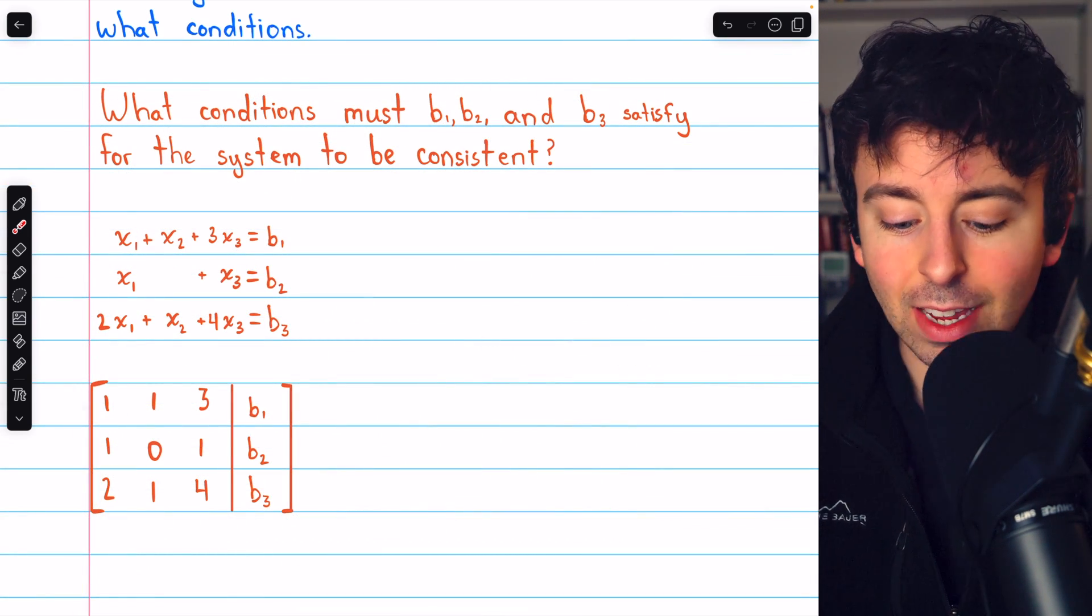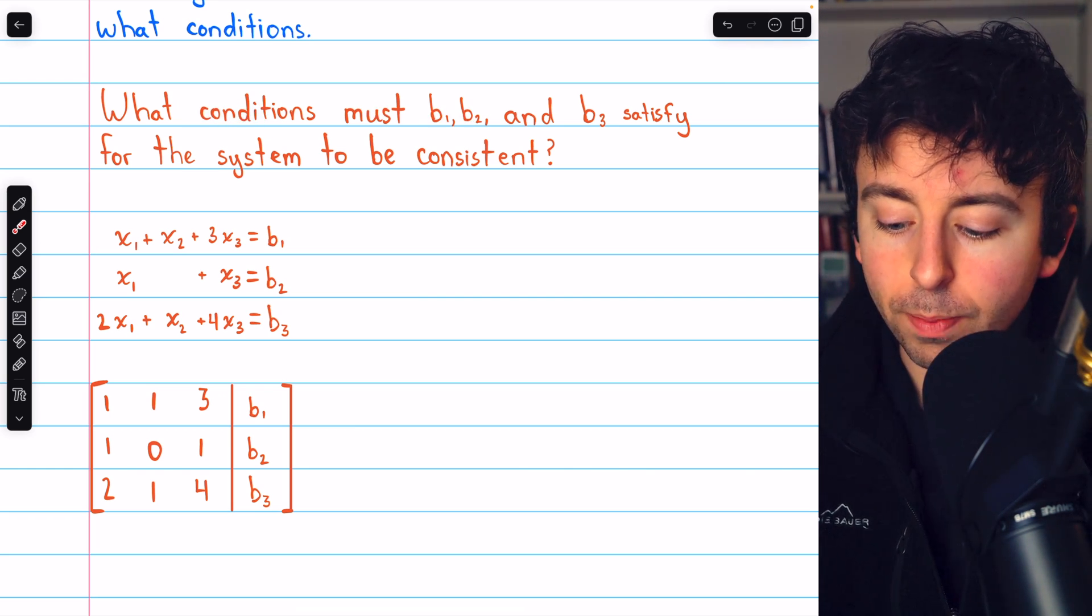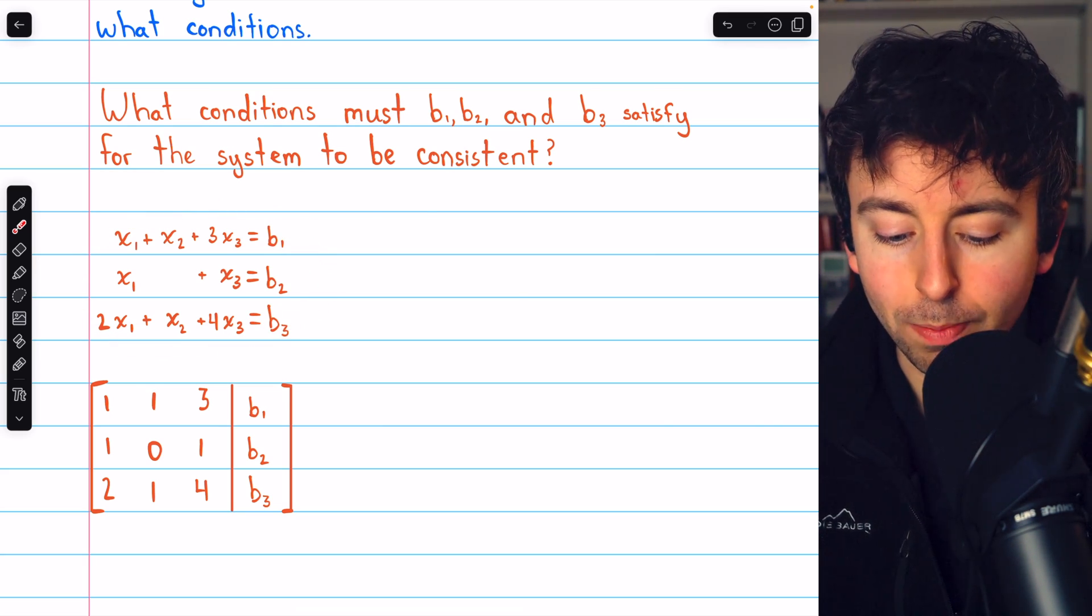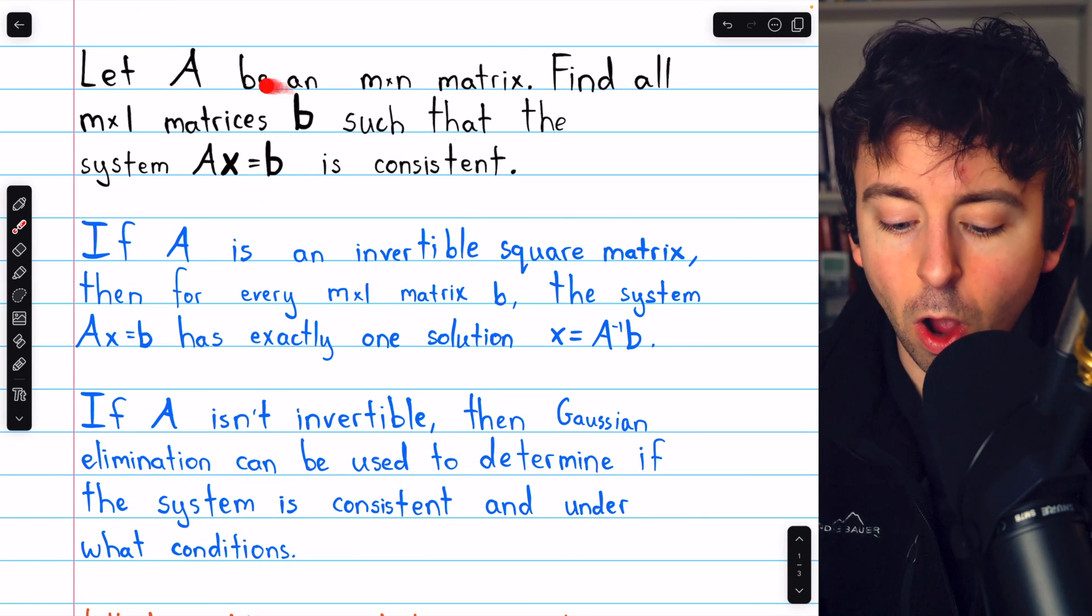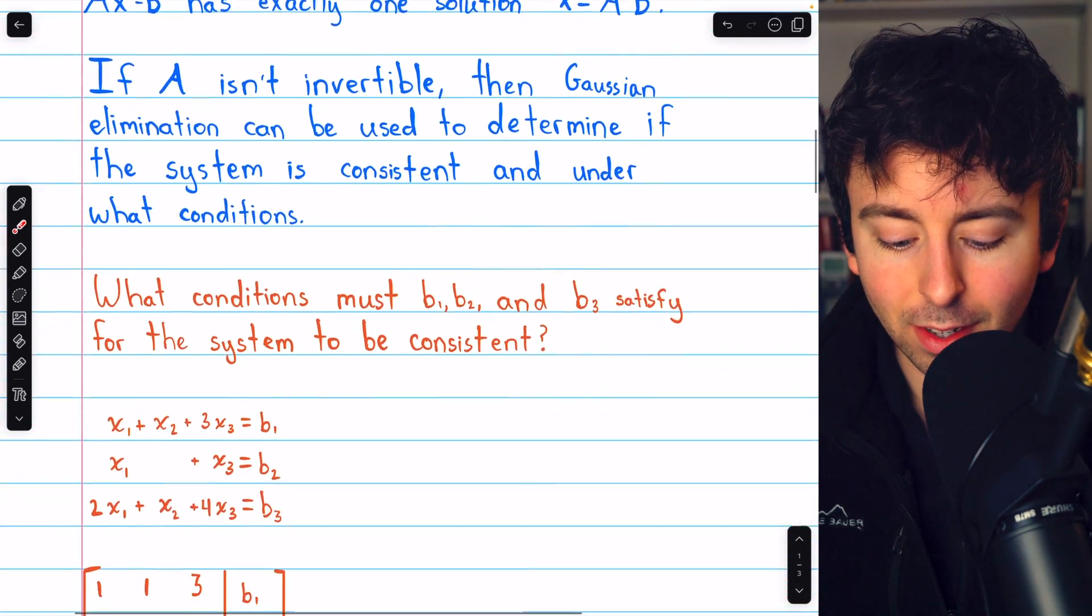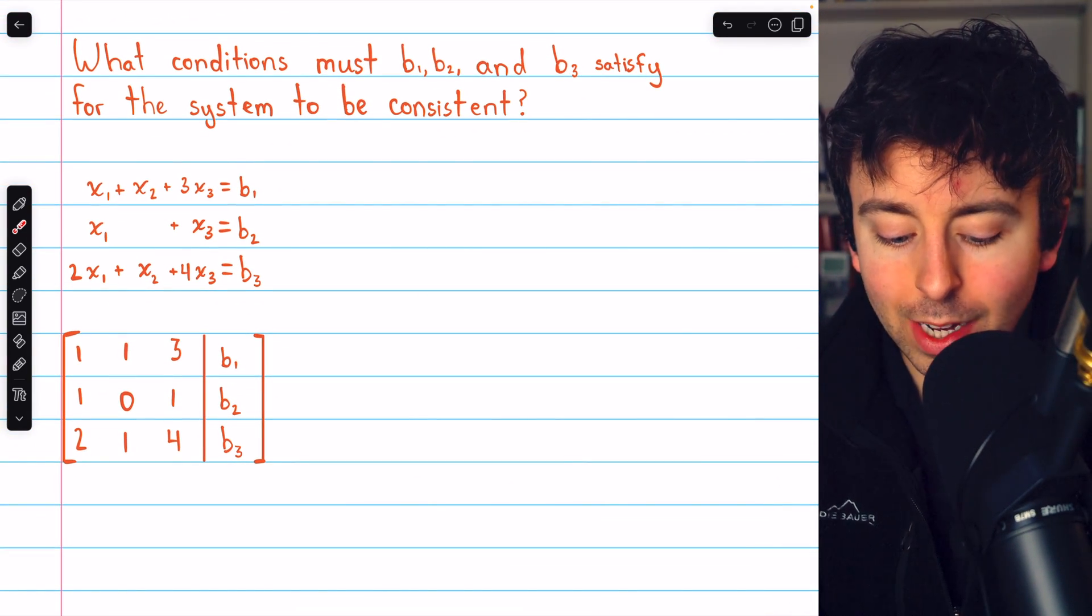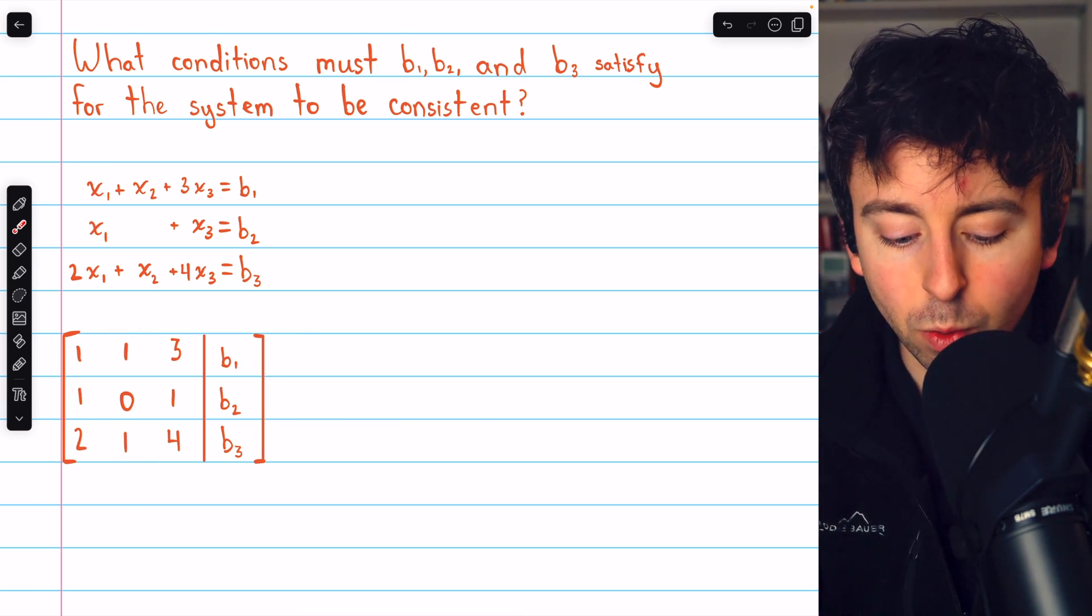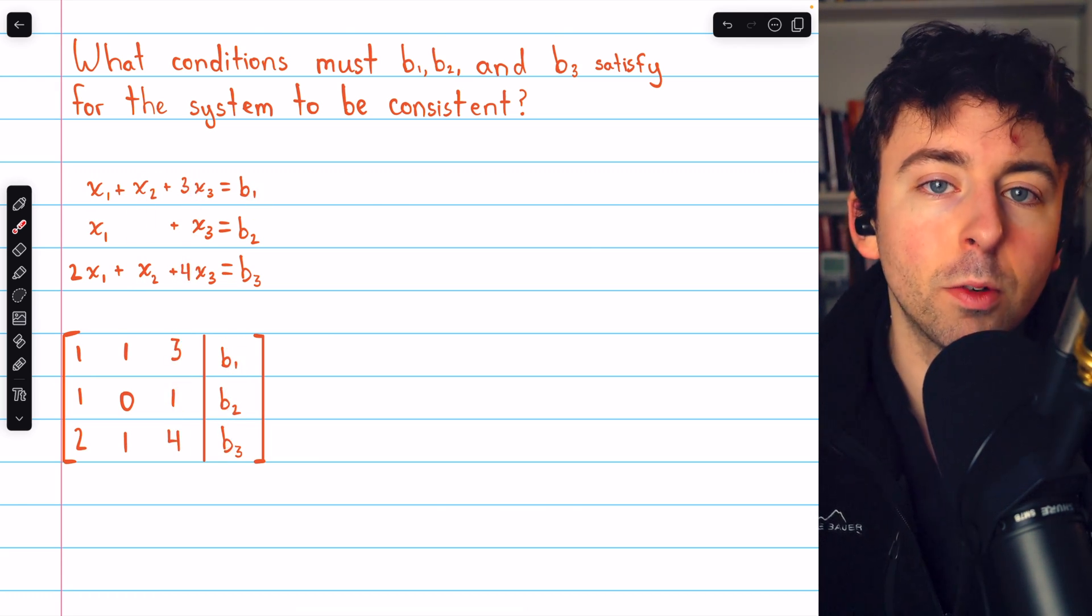We'll do two examples. Let's get into the first one. What conditions must b1, b2, and b3 satisfy for this system to be consistent? b1, b2, and b3 are the components of the m by 1 column vector b. So what restrictions must be placed on them for this system to be consistent, if any? Well, we begin by writing the augmented matrix for the system. Here are the coefficients of x1, the coefficients of x2, coefficients of x3, and the constants on the right.